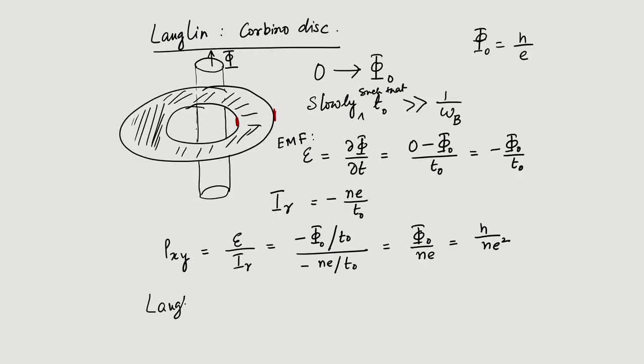Laughlin viewed it as a quantum pump that pumps electrons from the inner edge to the outer edge. This is a nice visualization of the quantum phenomena — one electron or two electrons being transported from the inner edge to the outer edge as you increase the magnetic flux threading the system. The annular region, where the two-dimensional electron gas exists, responds with a conductivity or resistivity that behaves in this particular fashion.